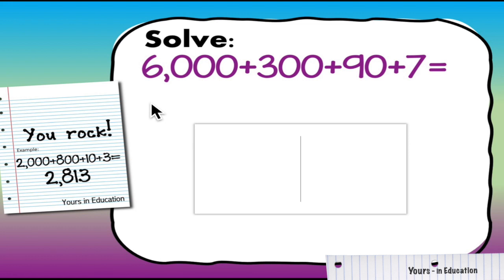The next type of problem is when you have to actually solve it. So you have 6,000 plus 300 plus 90 plus 7 and I give you a little example here. For example, 2,000 plus 800 plus 10 plus 3 is equivalent to 2,813.